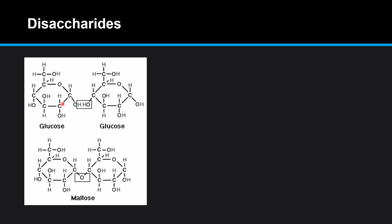Here we have two molecules of alpha glucose and they react together in a condensation reaction. The OH from one molecule of glucose and the H from another molecule of glucose react together to release a molecule of water. The link between these two molecules of glucose is called an alpha 1,4 glycosidic link or an alpha 1,4 linkage.